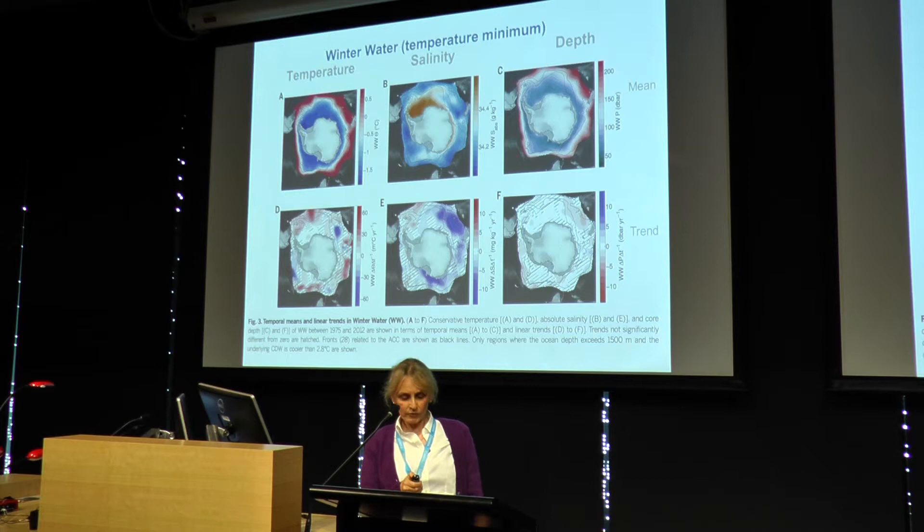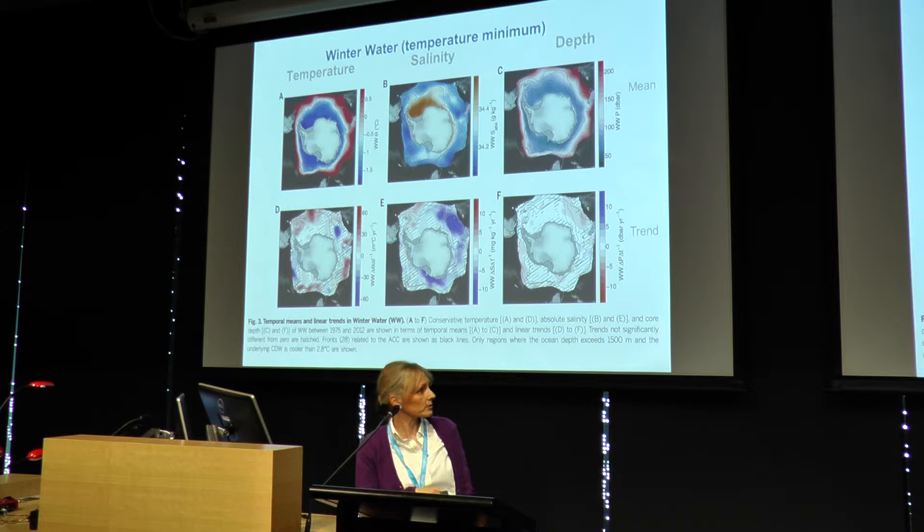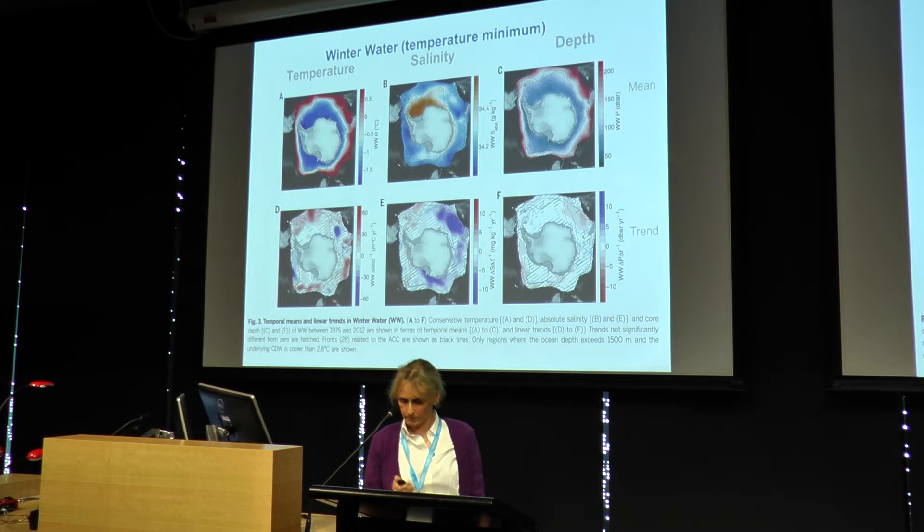If you do the same for the temperature minimum layer, the winter water, we've got temperature, salinity, and depth of the trends at the bottom, hatched out where it's not significant. You can see there are some regions where the winter water is freshening quite significantly, and a bit of warming in some areas.